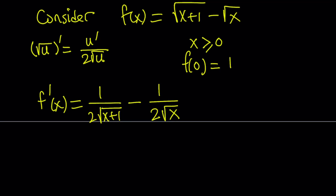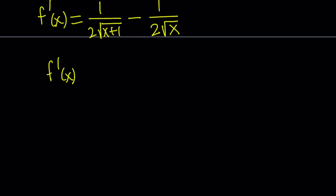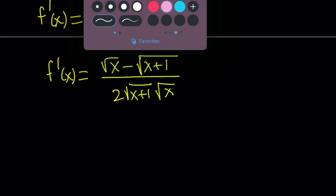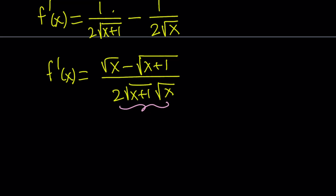Why is taking the derivative important here? We want to look at the function's behavior — is it increasing, decreasing, or both? Let's make a common denominator by multiplying the first term by square root of x and the second by square root of x plus 1. The denominator is 2 times the square root of x plus 1 times the square root of x. The denominator is a positive quantity for x greater than 0. However, the numerator has square root of x minus square root of x plus 1, and since x plus 1 is greater than x, the square root of x plus 1 is greater than square root of x, making the numerator negative.